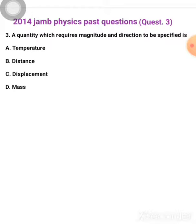But remember scalar and vector quantities. Scalar quantities are those quantities that have magnitude but no specified direction, while vector quantities are those quantities that have both magnitude and direction.